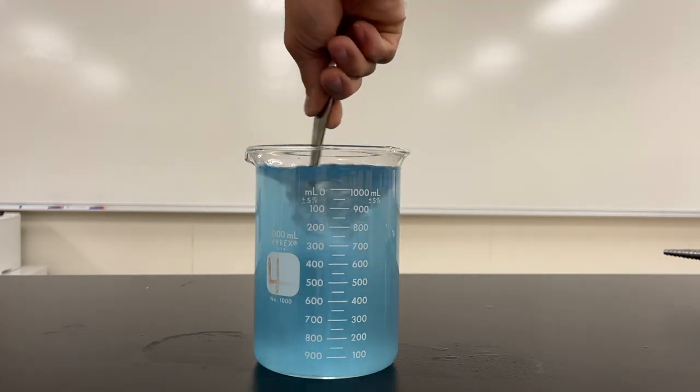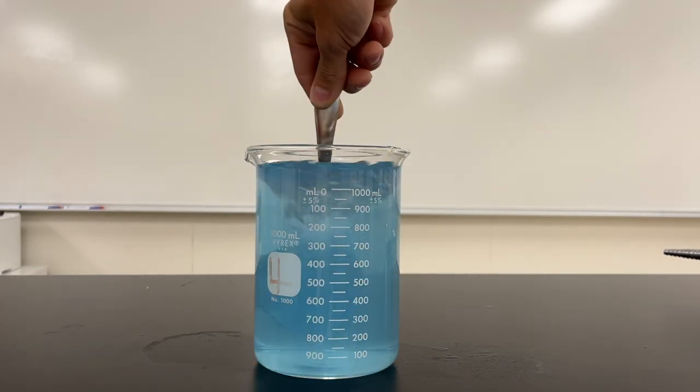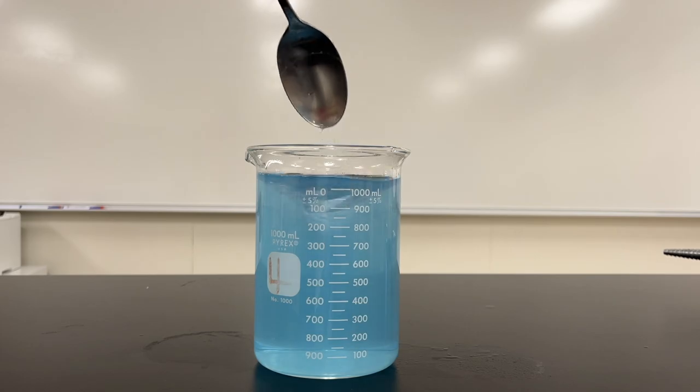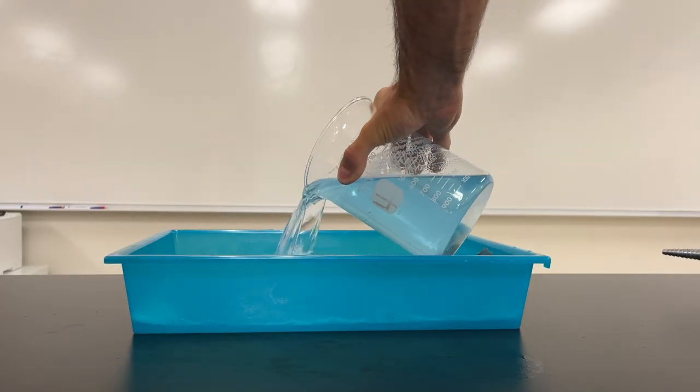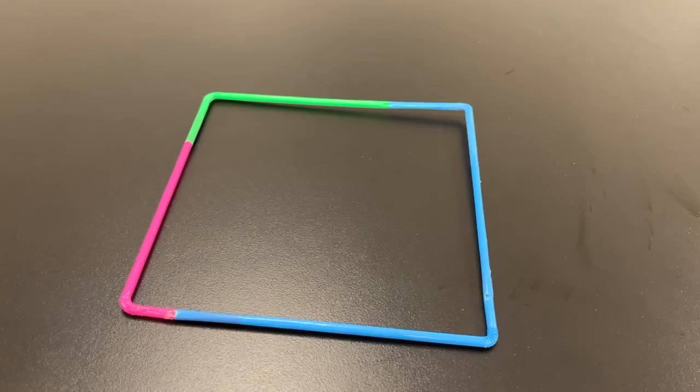And then take about 20 to 30 seconds to really mix it together. After that, just pour it in your bin and you're ready to make a square out of straws.